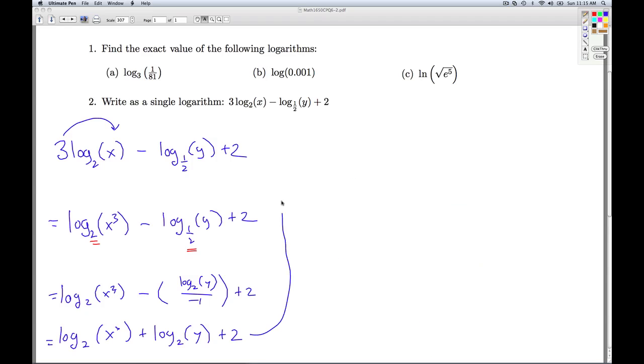Alright, so let's continue over here then. So now I've rewritten everything in these first two terms in terms of log base 2. So I can use the product rule. Addition on the outside corresponds to multiplication on the inside. So I'm going to multiply the x cubed and the y together. Plus 2. And now I'm back to the same problem I had before. I want to combine these using the product rule again.